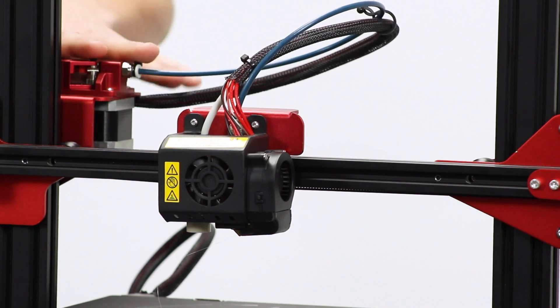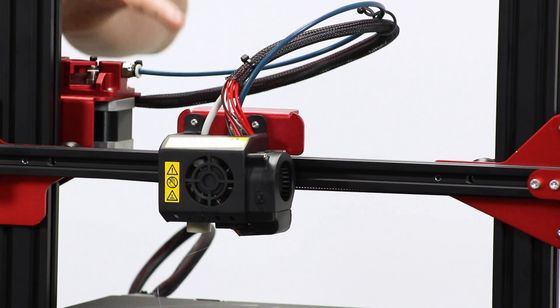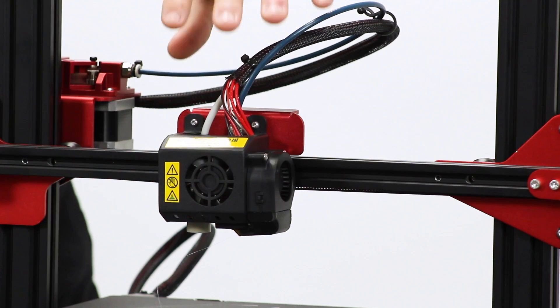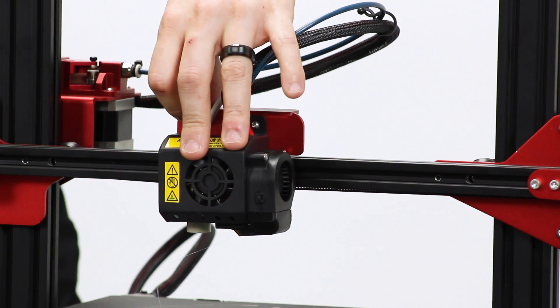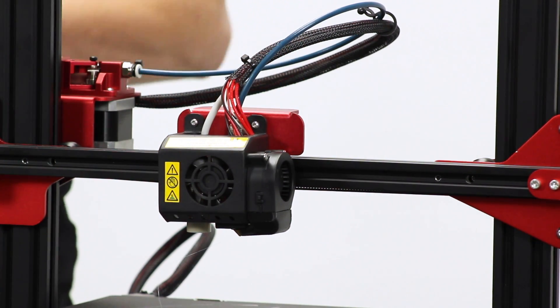And then all of that leads up here to the extruder assembly that we'll cover in just a couple minutes. So with that said, I'm going to pull this fan shroud off, and we're going to take a look at the hot-end assembly itself.